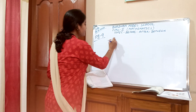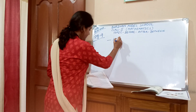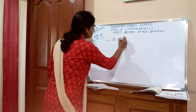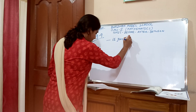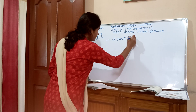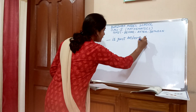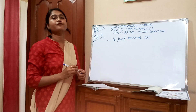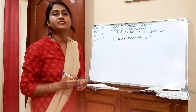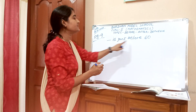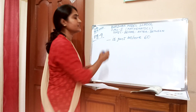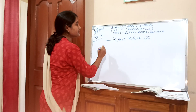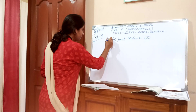Dash is just before 60. What is the before number of 60? The before number of 60 is 59.